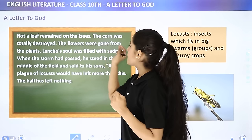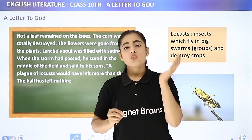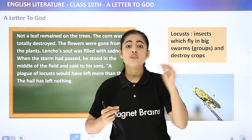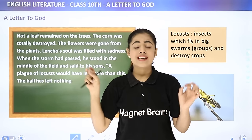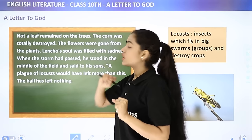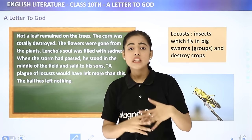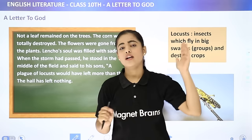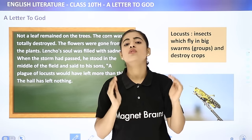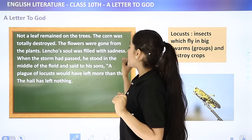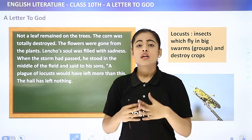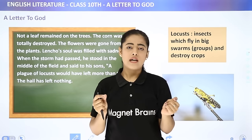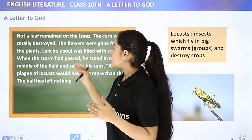Not a leaf remained on the trees. The corn was totally destroyed. The flowers were gone from the plants. Lencho's soul was filled with sadness — he was completely disheartened. When the storm had passed, he stood in the middle of the field and said to his sons: 'A plague of locusts would have left more than this.' Locusts are insects that fly in big swarms and destroy crops — but even they would have left something. The hail has left nothing.